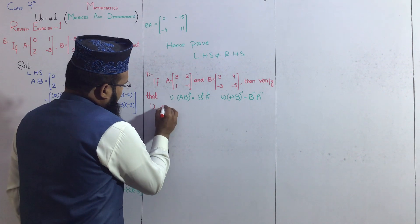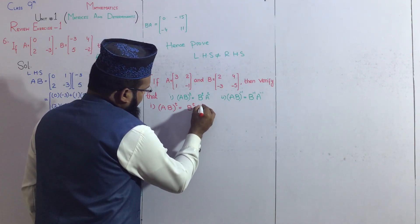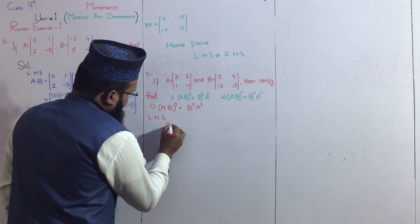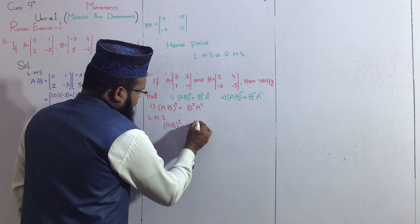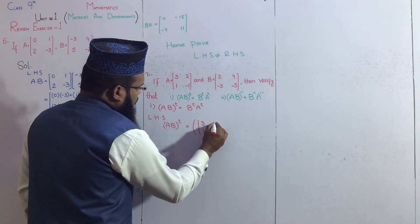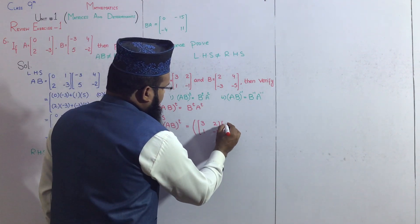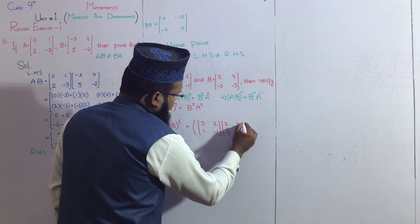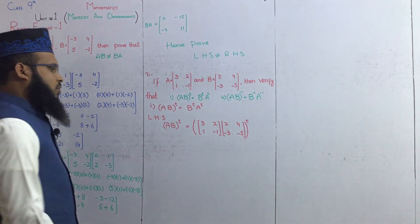First part: (AB) whole ka transpose is equal to B transpose times A transpose. Left hand side solve karte hain. LHS hamare paas kya hai: (AB) whole ka transpose. Ab hum likhte hain A times B in round brackets. A matrix hamare paas given hai: first column 3, 1; second column 2 aur minus 1. B matrix ki first column hai 2, minus 3; second column 4 aur minus 5. Whole ka transpose.